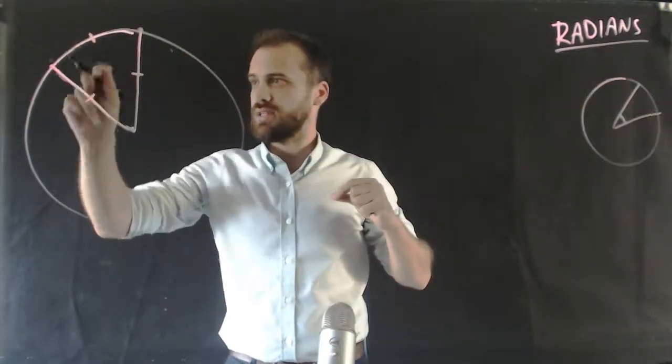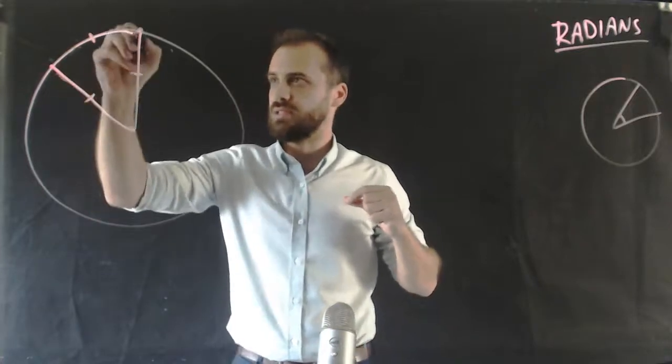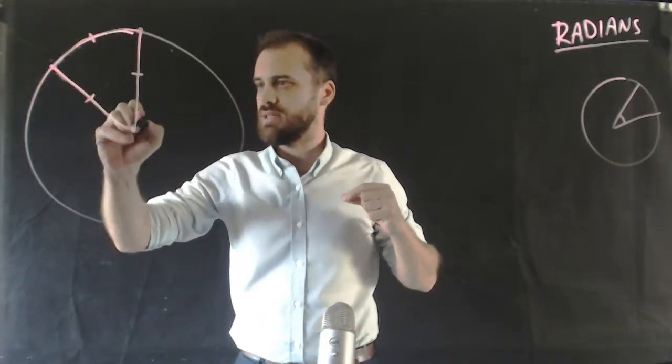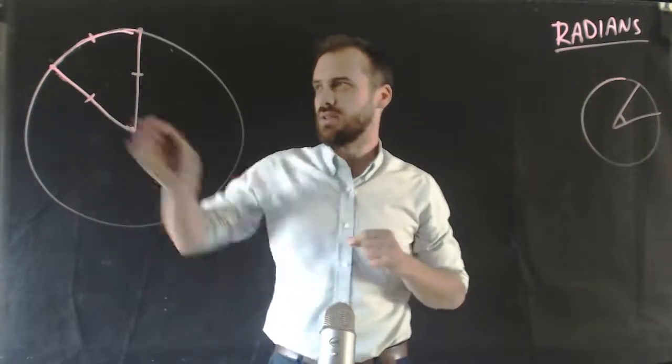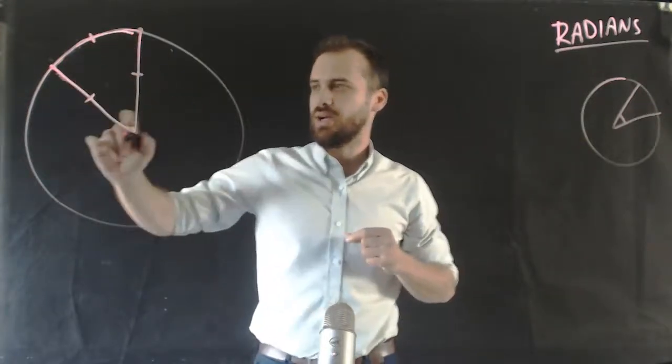This curve is the same length as this, which is the same length as this. Now if that's true, this measure of angle is going to be equal to one radian.